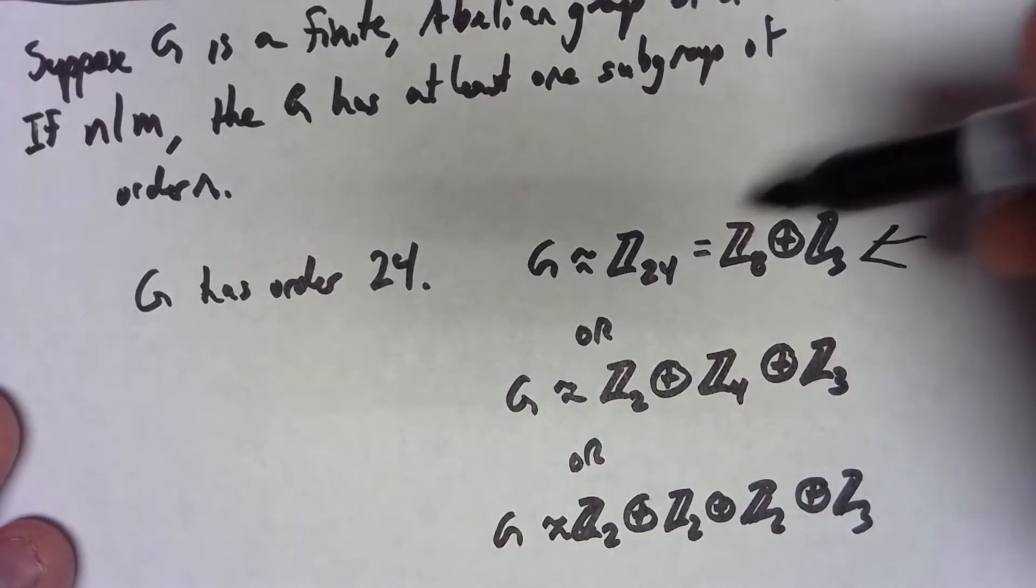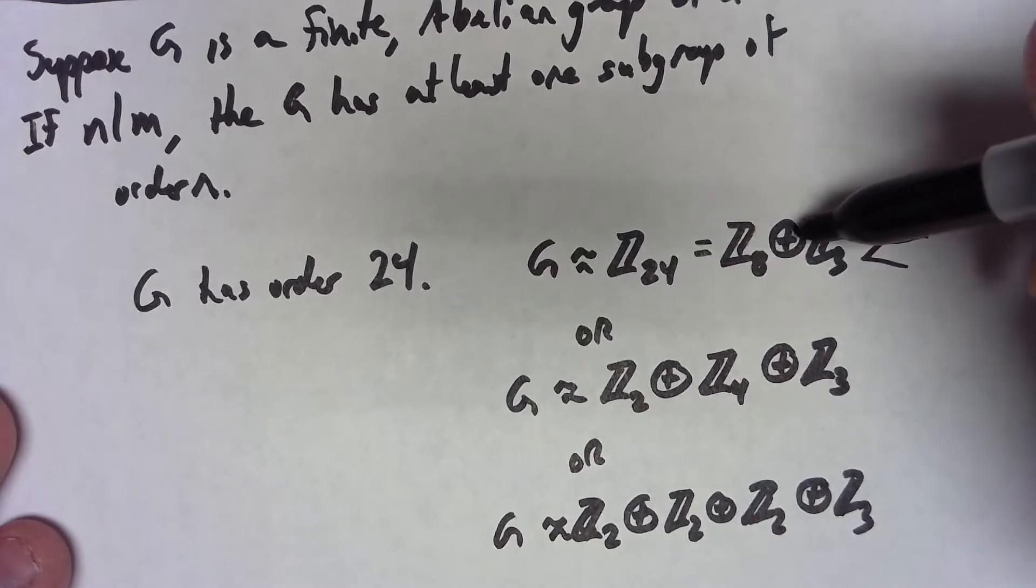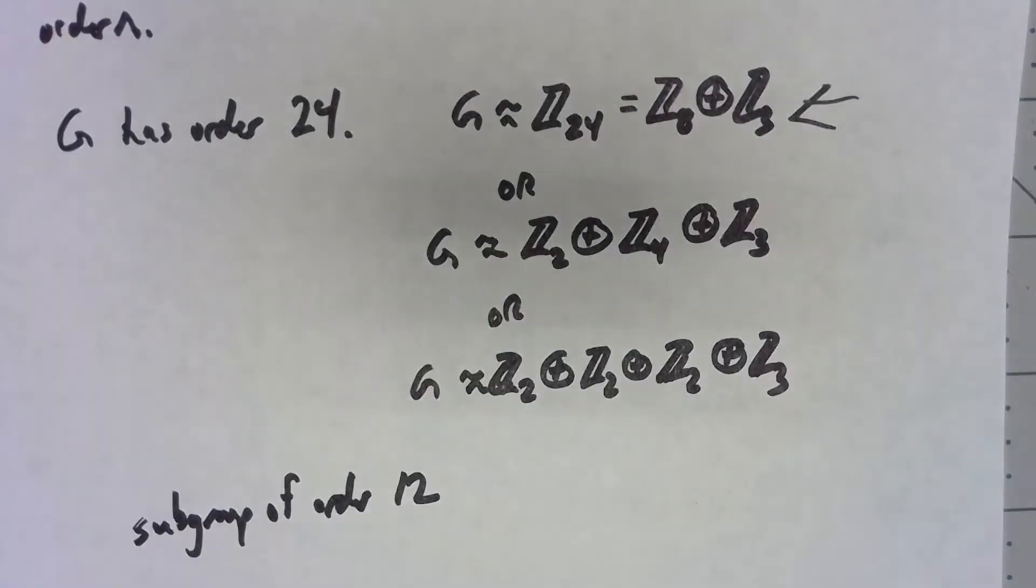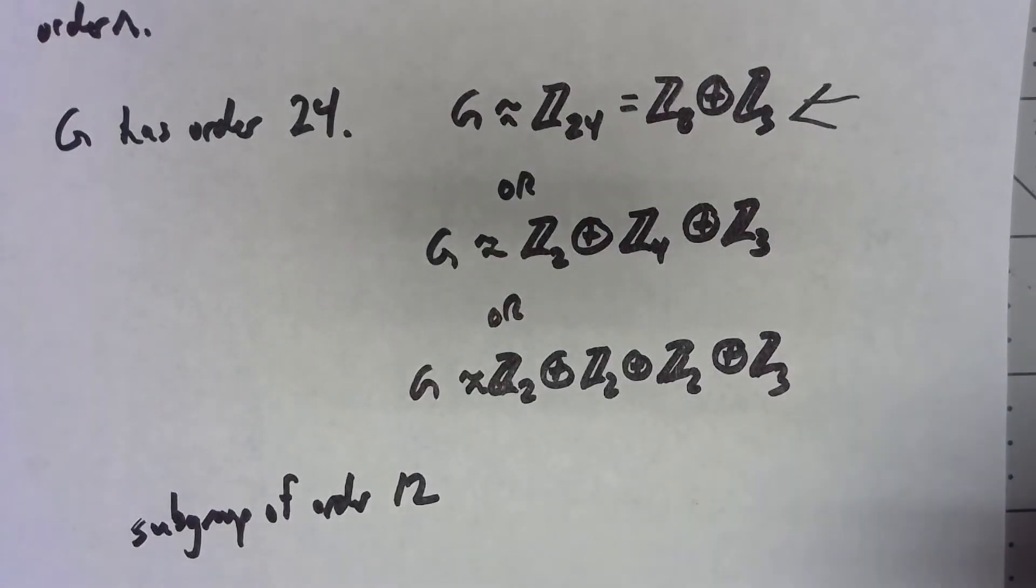It's not as easy to see in Z8 direct product Z3 that we've got a subgroup of order 12. But it's there.